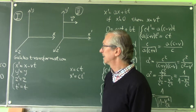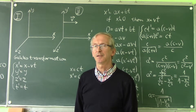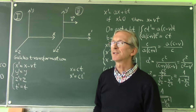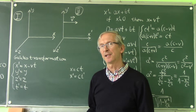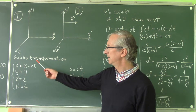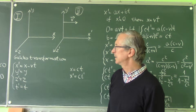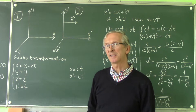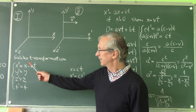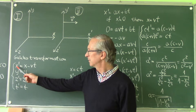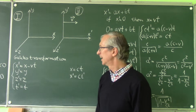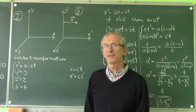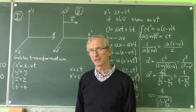Let's derive the real transformation. Although the Galileo transformation is not correct, it helps us foresee the form of the real transformation. We see that the spatial coordinate x' depends on x and t linearly, and we expect that the same will hold in the real Lorentz transformation.